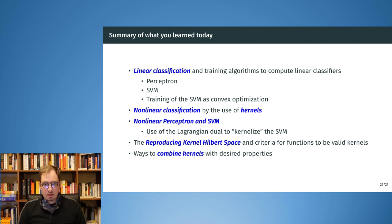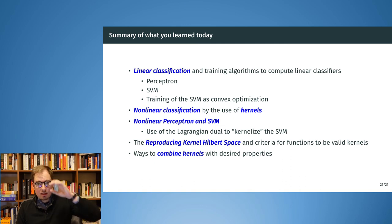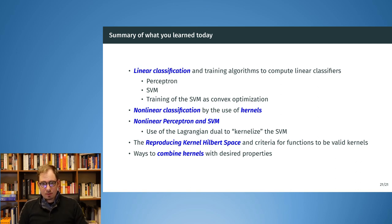Furthermore, we saw the rules for kernel functions to actually be kernels: they must be symmetric and positive definite. The reproducing kernel Hilbert space explains why — because we first project or expand the features into a function space and then do linear classification in that function space. And there are ways to combine kernels in order to obtain kernels with the properties we want. That's it for today — see you soon in the next lecture, which will be on conic programming.